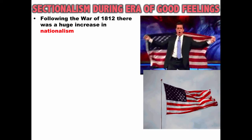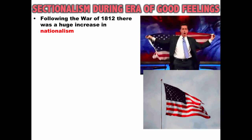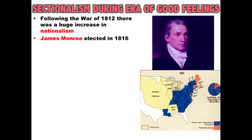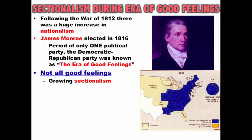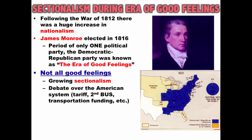Following the War of 1812, there was a huge increase in nationalism. James Monroe was elected president in 1816, and this period of only one political party — the Democratic-Republican Party — is often referred to as the Era of Good Feelings. But even during this period, there is not all good feelings: there is growing sectionalism, a debate over the American System, the tariff, the Second Bank of the US, transportation funding, and a huge debate over slavery.